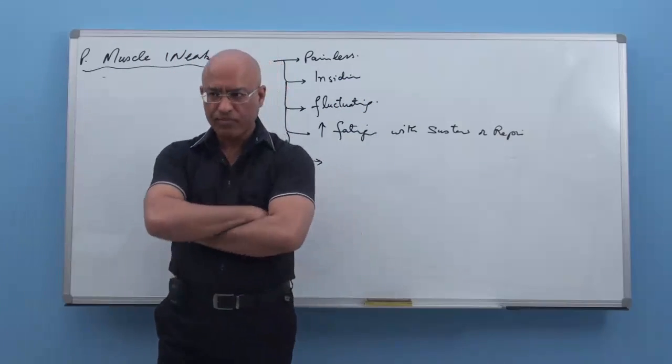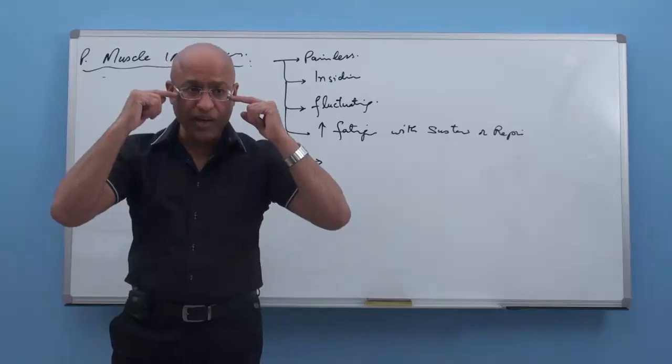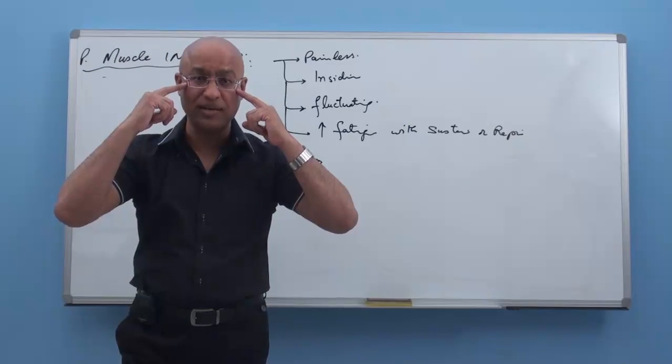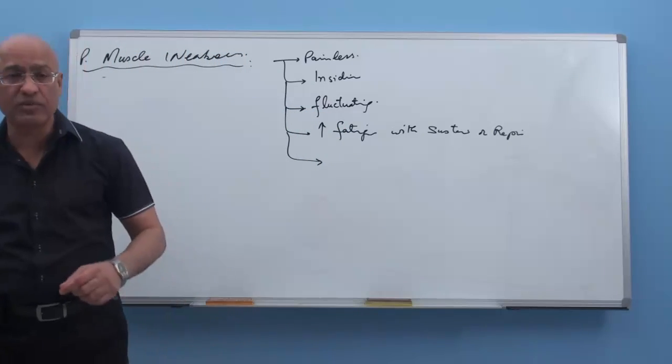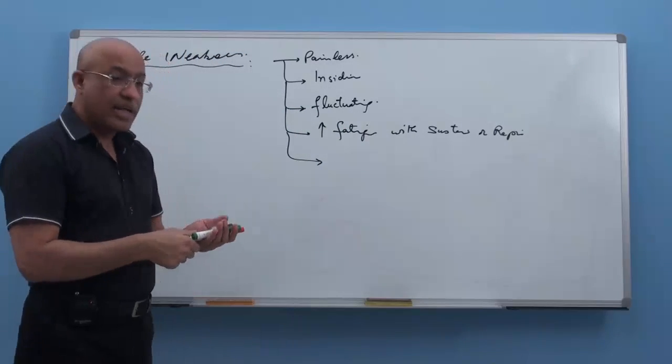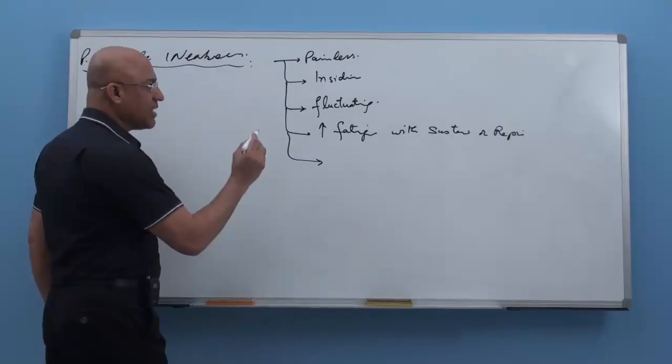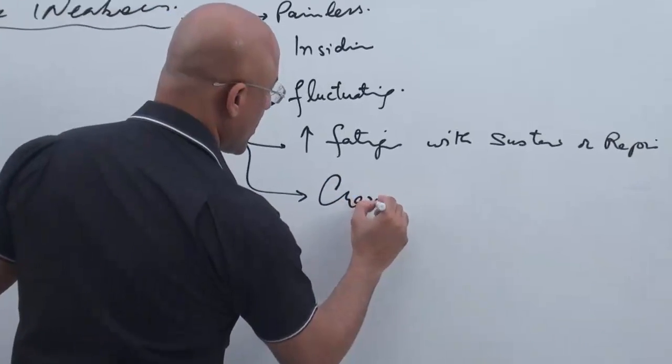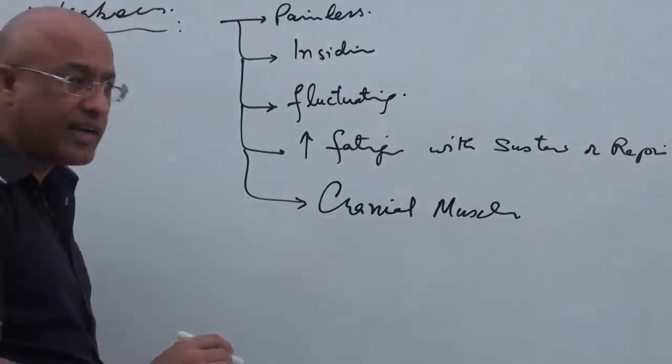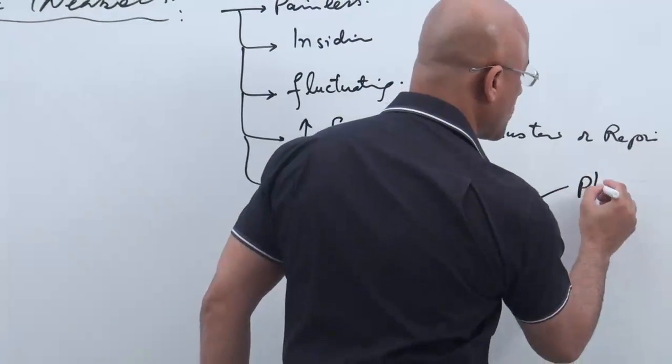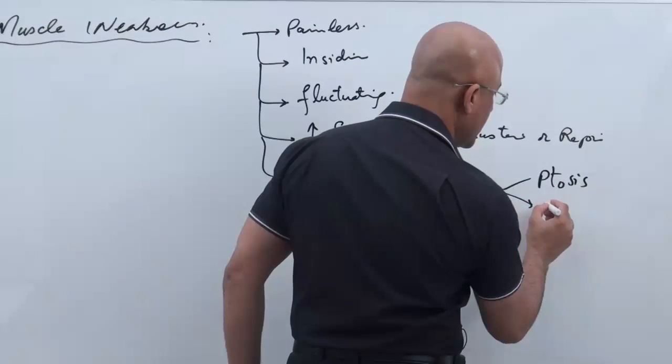So this patient classically comes with ptosis of upper eyelid. This patient classically presents with weakness of extraocular muscle, which clinically is the classical presentation. The patient may develop ptosis, then diplopia.